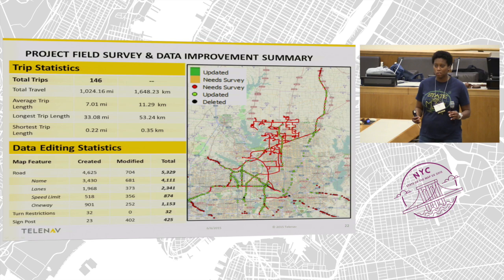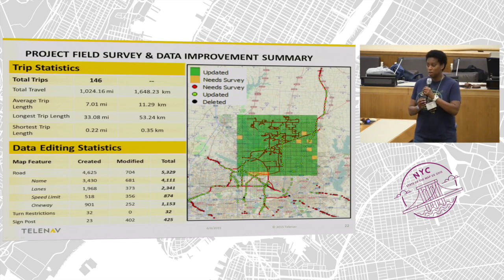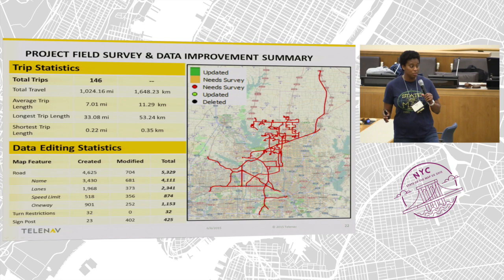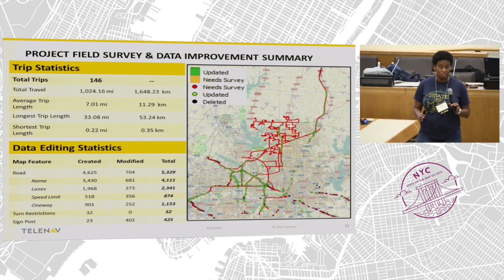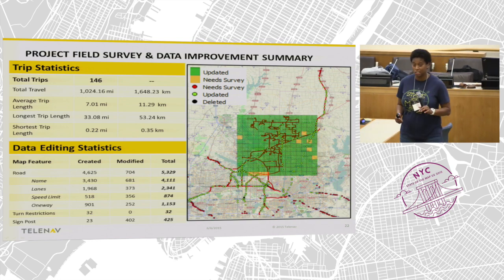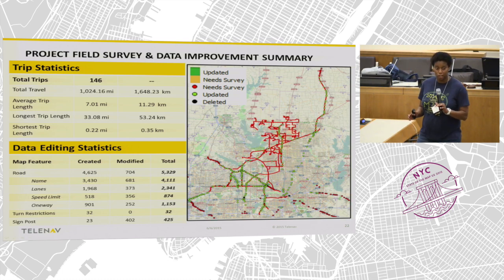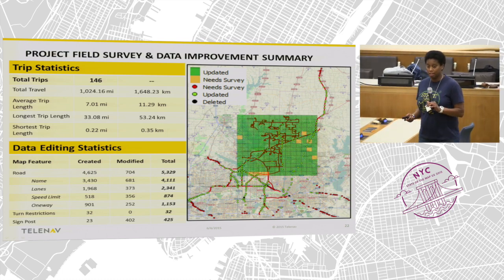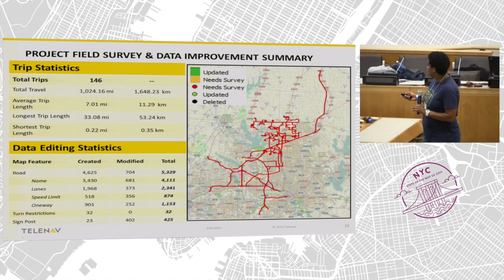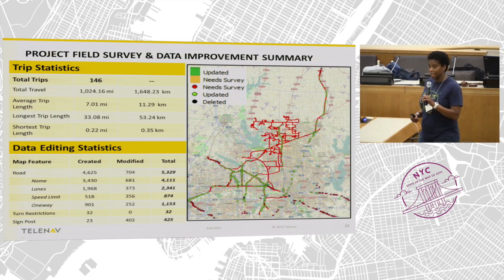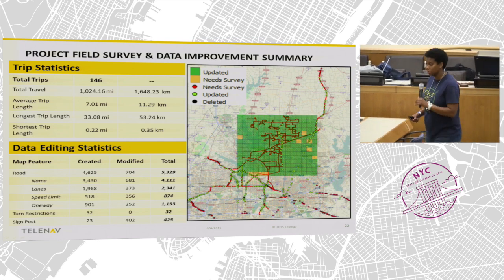These cases were among the many collected during a 1,000-mile field survey conducted in March 2015. A total of 146 trips were made, and literally thousands of different navigation-related attributes were updated as a result.